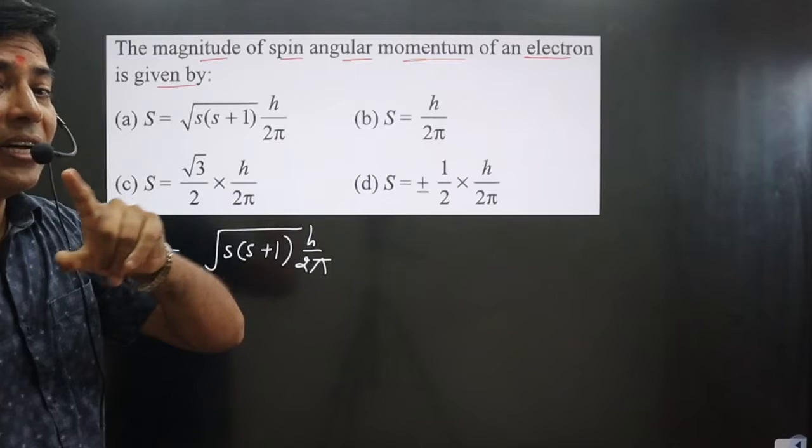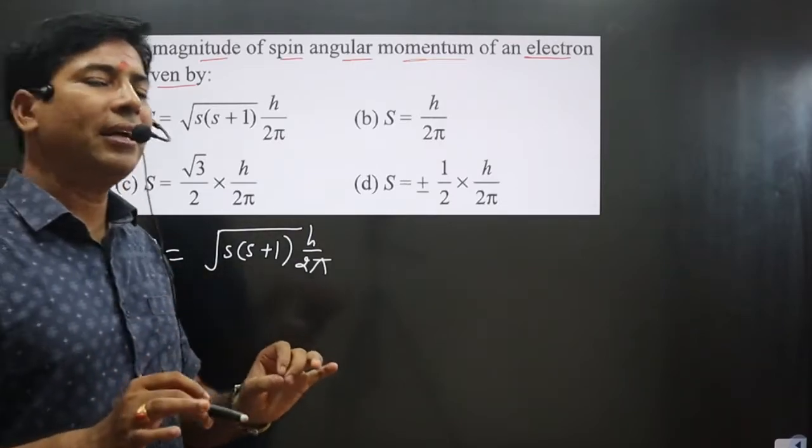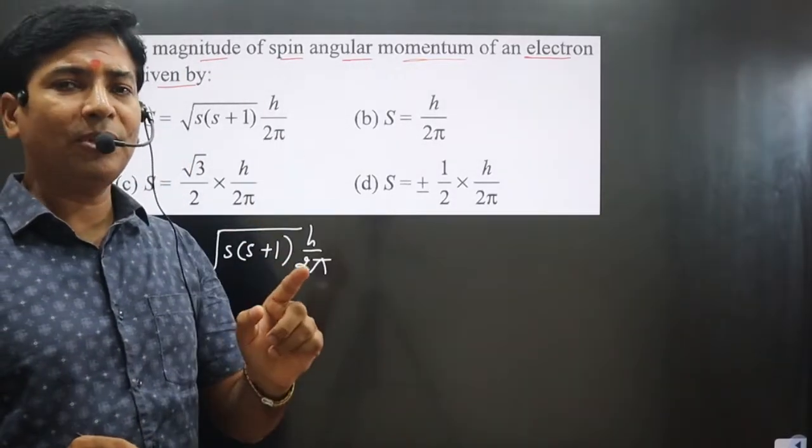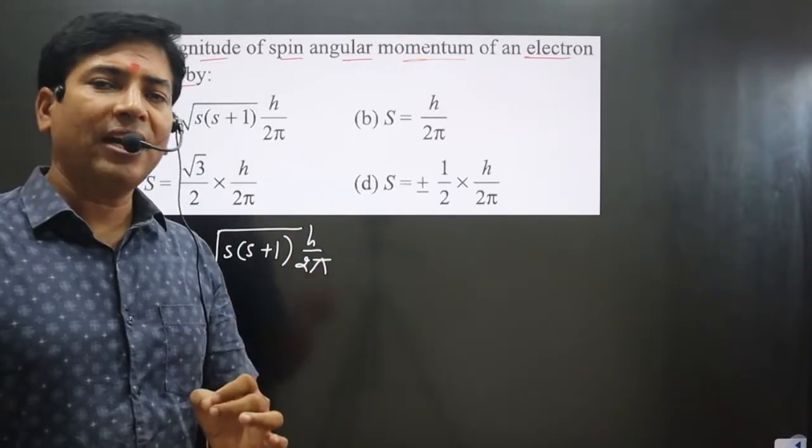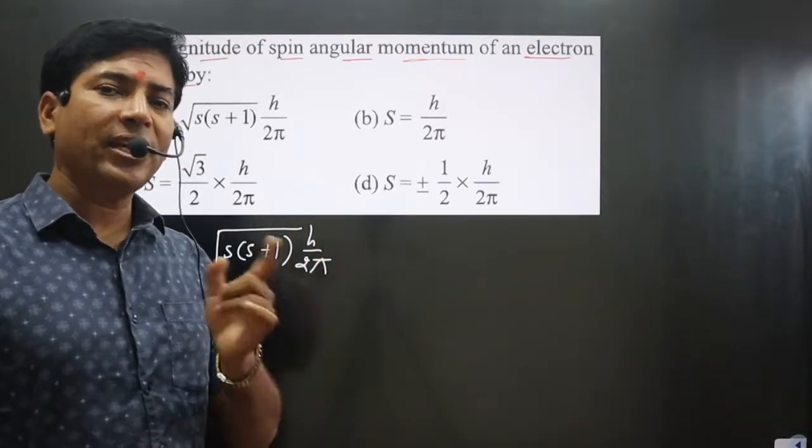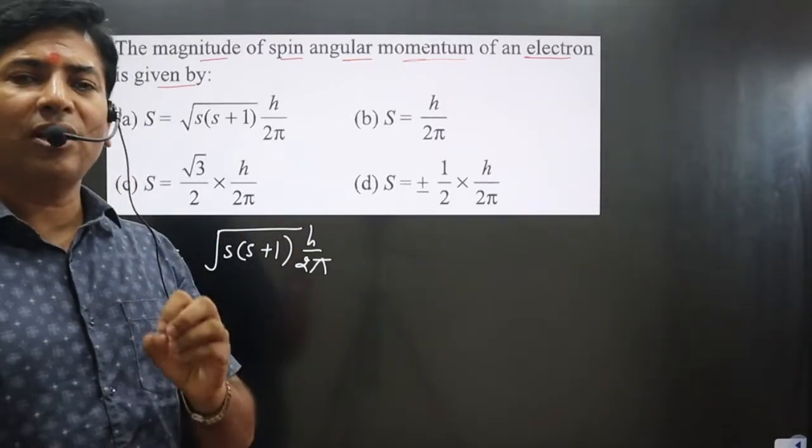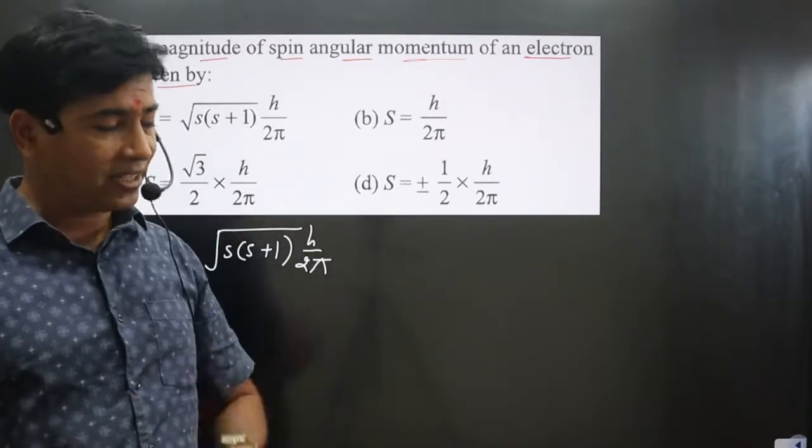We have learned that electrons revolve in an orbit either clockwise or anticlockwise. The spinning of an electron is either clockwise or anticlockwise, and that's why its value is always taken as plus one-half or minus one-half.